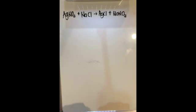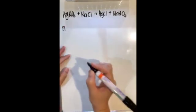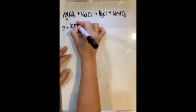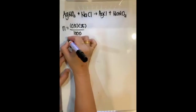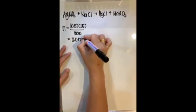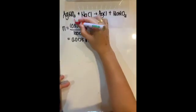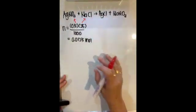Now let me show you all the steps for calculating the heat of precipitation between silver nitrate solution and sodium chloride solution. Step one: find the number of moles for silver nitrate and sodium chloride. Both have the same concentration and the same volume, so using the formula MV ÷ 1000, we calculate 0.0125 mol for silver nitrate. Since sodium chloride has the same concentration and volume, it also gives 0.0125 mol.